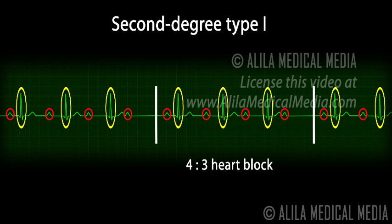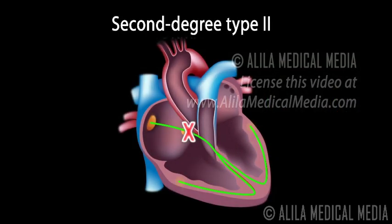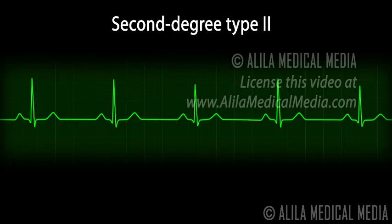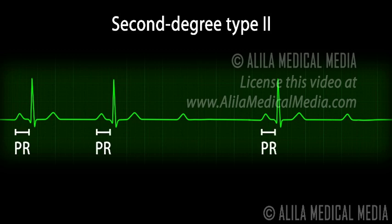Second degree type 1 blocks are usually mild and no specific treatment is indicated. In type 2 second degree blocks, some of the electrical signals do not reach the ventricles. On an ECG, this is seen as intermittent non-conducted P waves. The PR interval, however, remains constant in conducted beats.